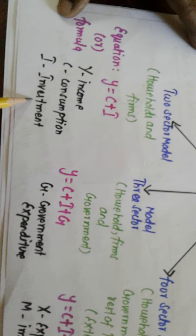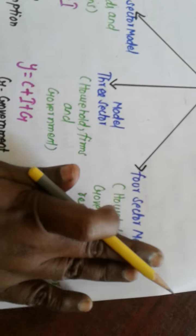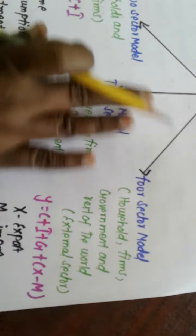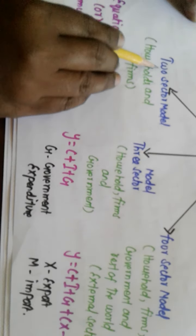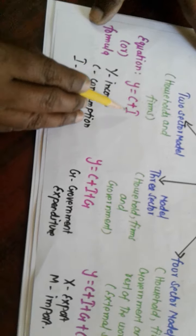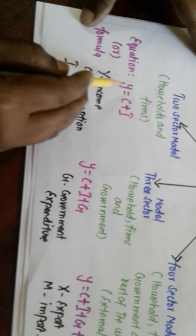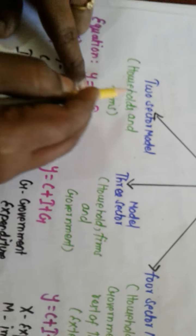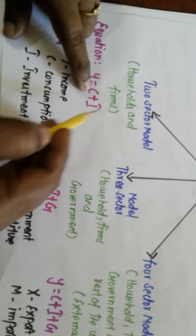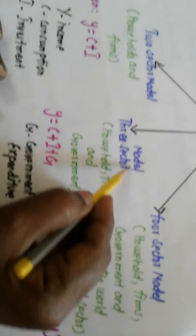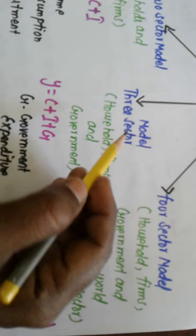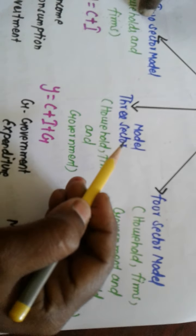Y here refers to income, C here refers to consumption, and I here refers to investment. In each model, we just add one variable at a time. So for the two-sector model: Y equals C plus I, where Y means income, C refers to household, and I refers to firm.